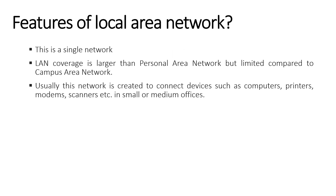Currently, it is possible to exchange information at a maximum speed of 1 Gbps through the use of LAN. Twisted pair cable, coaxial cable, optical fiber cable, and radio waves are used as transmission media for making this network. Transmission media refers to the cable methods used to connect computers to create networks and exchange data.